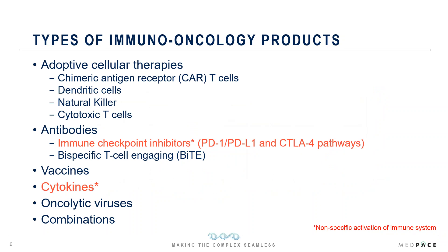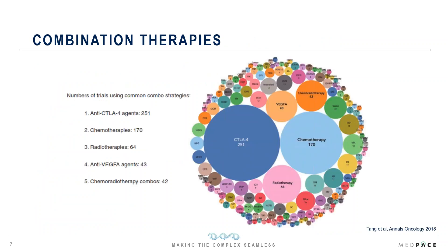Cellular therapies pose unique circumstances, as they are typically derived from either the patient or a donor, with unique toxicities and operational considerations. As more immuno-oncology agents are approved, many are being used in combination therapies — not only with other IO agents, but also with chemotherapy and radiation. The immune checkpoint inhibitors targeting CTLA-4 are the most commonly used agents in combination trials, followed by chemotherapy and radiation therapy.